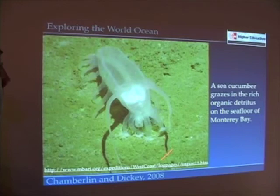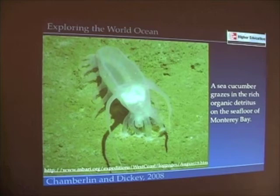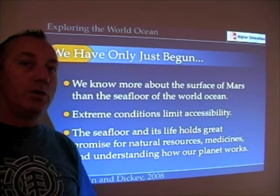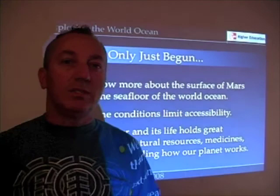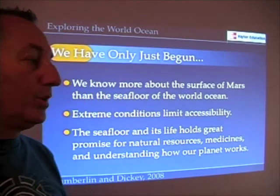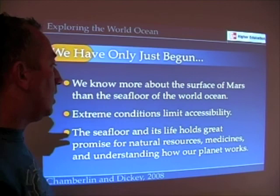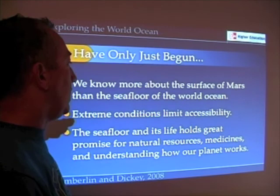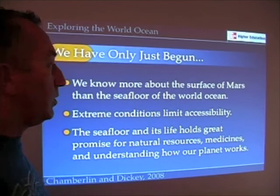This is the kind of material you find on the seafloor in different places — this happens to be the seafloor of Monterey Bay — showing a rich carpet of organic material that provides food for organisms like sea cucumbers. We know more about the surface of Mars than we do about the ocean floor. The extreme conditions limit our accessibility to it, but the seafloor holds great promise for natural resources, understanding how the ocean works, potential medicines, and aesthetic value. We've only just begun to explore the world ocean.